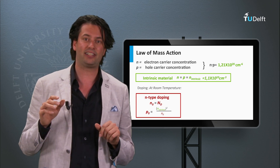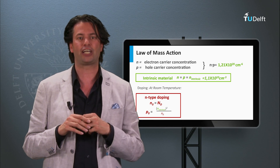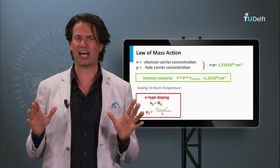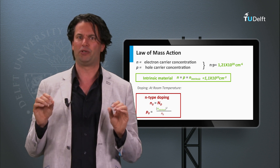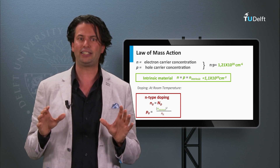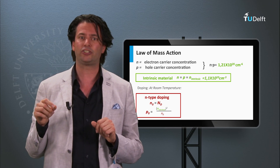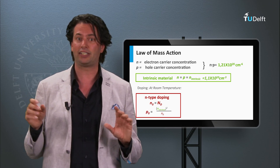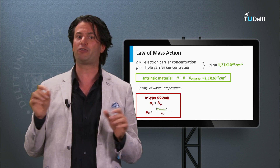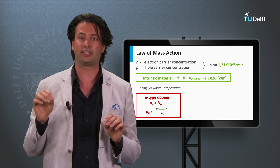Now we consider an n-doped silicon material. We incorporate a density of phosphorus atoms in the lattice, which we call n_d. We assume that all donors give a free electron to the lattice, so the electron density n_0 is equal to n_d. Now we can calculate the hole density p_0. The law of mass action tells us that at a given temperature the product of the electron density and the hole density is constant, independent of doping. So p_0 is equal to the square of the intrinsic charge carrier density divided by the electron density n_0.